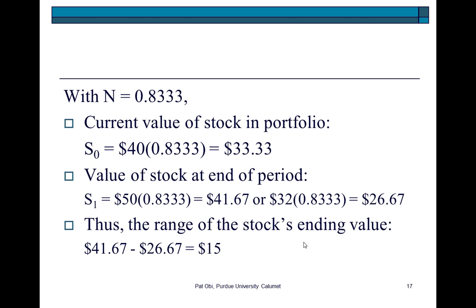Armed with this information, if we're going to buy 0.83 shares of stock, then the current value of our portfolio would be $40 — the current stock price — multiplied by the number of shares, giving us 33.33. At the end of the period, if the stock goes up in price, the total value of our stock portfolio would be $50 multiplied by the number of shares, which is 41.67. If the stock goes down in price to $32, then the total value of our stock would be $26.67.